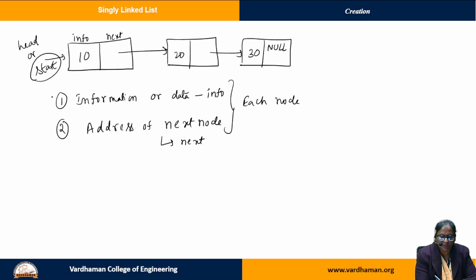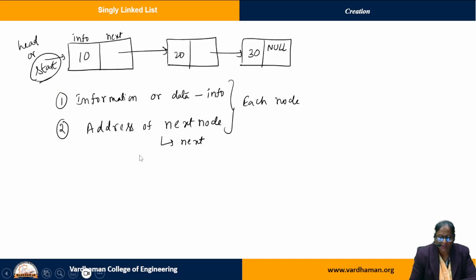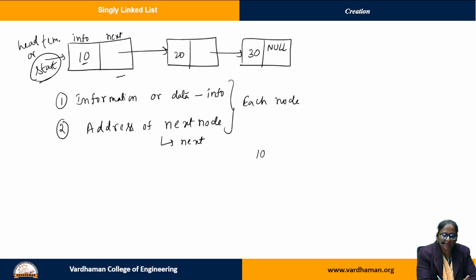Initially we will have the address of the first node, and we refer to that address with start. Now, suppose if I want to display the content of each and every node in the linked list. We cannot move start to the next positions, because if we want to do any further operations on the linked list, we need to have the address of the first node. So we take a temporary variable and use temp to move forward until the list gets empty.